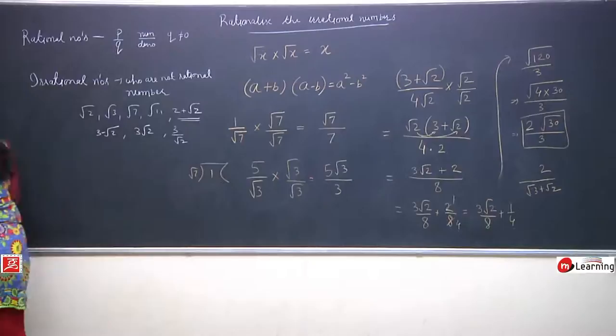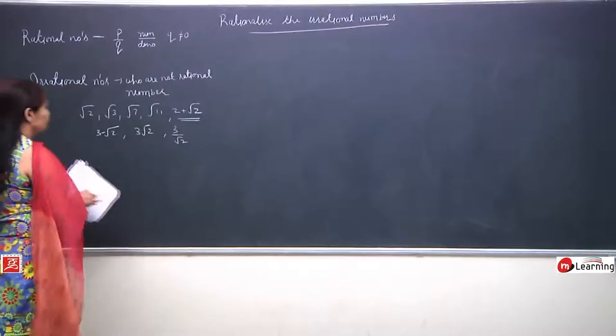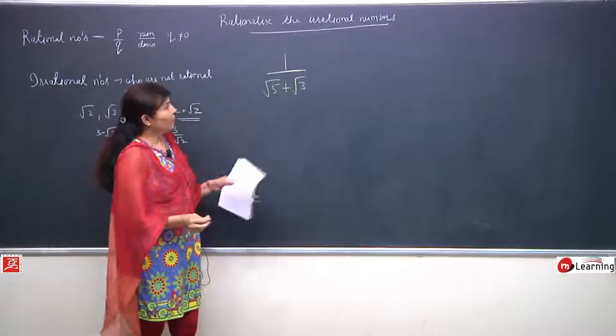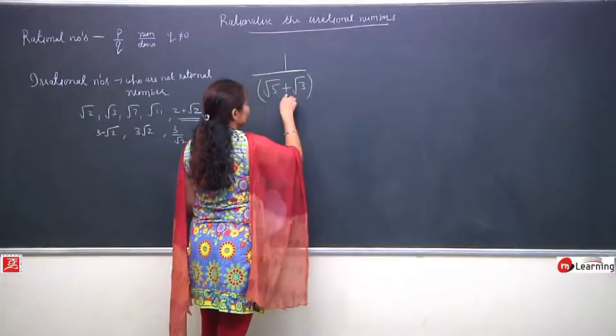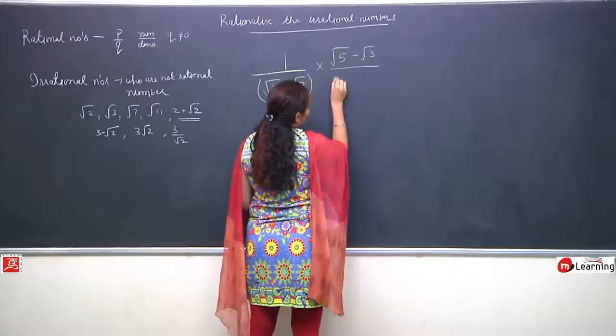Now we will try to understand this step by step, and its utility will also become clear. Now I have a situation like 1 by (root 5 + root 3). Again I will rationalize but the procedure will change a little. What is the change? Look at the denominator - whatever operation exists between them. Here the operation is plus. We take the just opposite sign and multiply and divide.